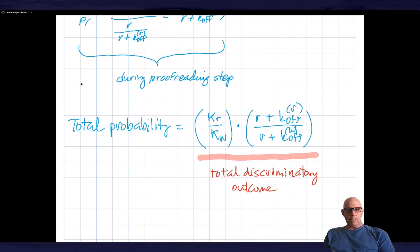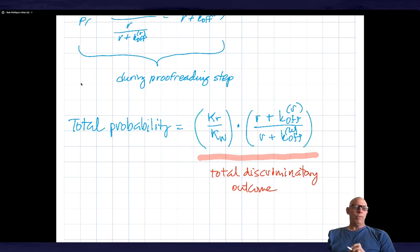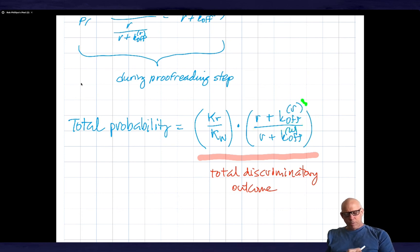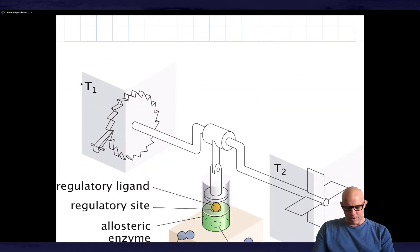And so the outcome of all of this is that we find that the total discrimination is the ratio of the KDs, but times this extra discriminatory factor. And notice, if K-off is much bigger than R, then I'm left with K-off wrong over K-off right, which is just the ratio of the KDs again. And so I end up, as I claimed yesterday, with the total discrimination being the ratio of the KDs squared. And that's kind of one of the original outcomes of the thinking of Hopfield and Ninio.